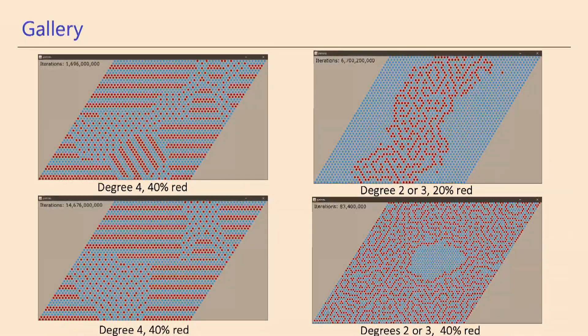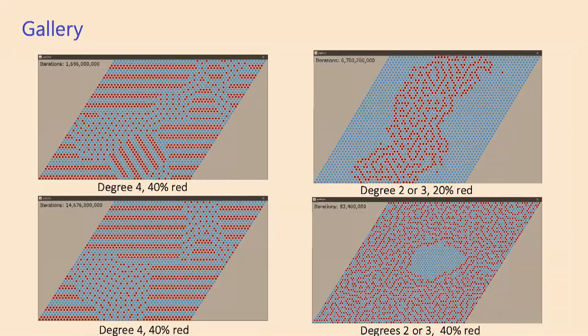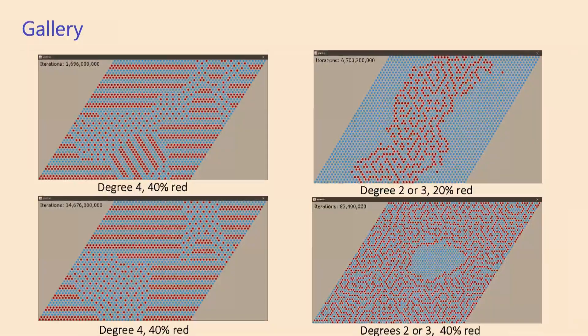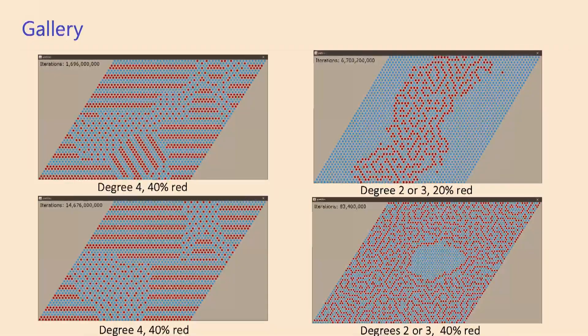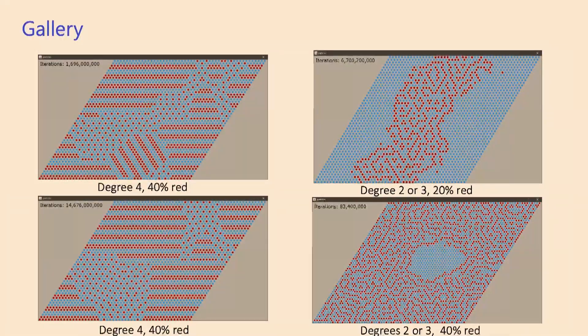This is an example of favoring degree two or degree three. So you're indifferent between two and three. And here you see on the top, if you started with 20% red vertices, and on the bottom is 40% red vertices. Again, you see these images just emerging naturally.